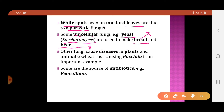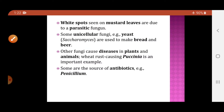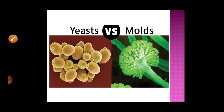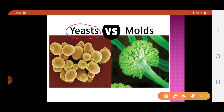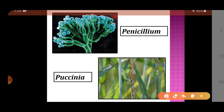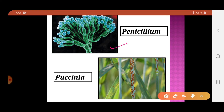Certain fungi cause diseases in plants and animals. For example, the fungus Puccinia causes rust in wheat. Some fungi are a very good source of antibiotics — the most common being Penicillium. Two different types of fungi can be seen: the first is yeast, which is unicellular, and the next is mold, which is multicellular. Other examples include Penicillium and Puccinia.